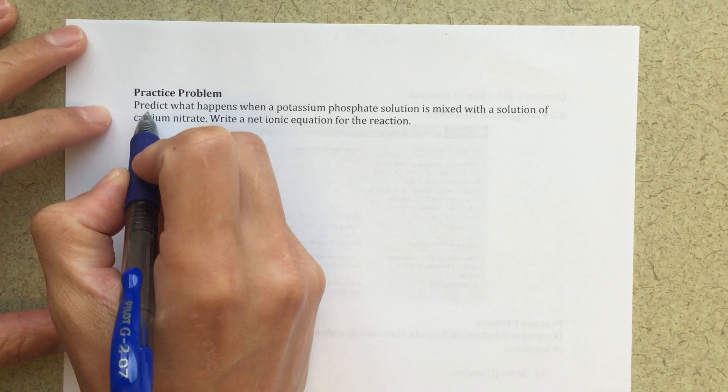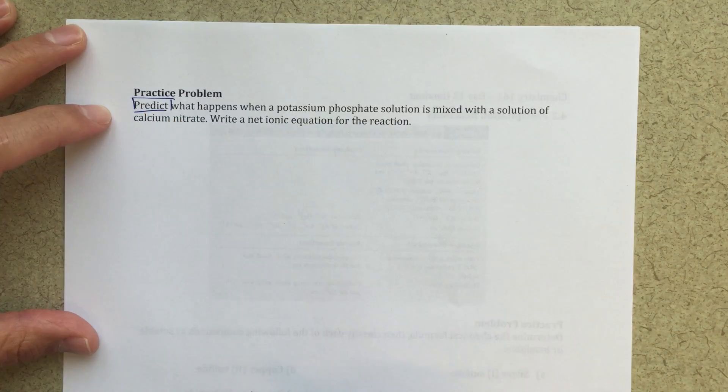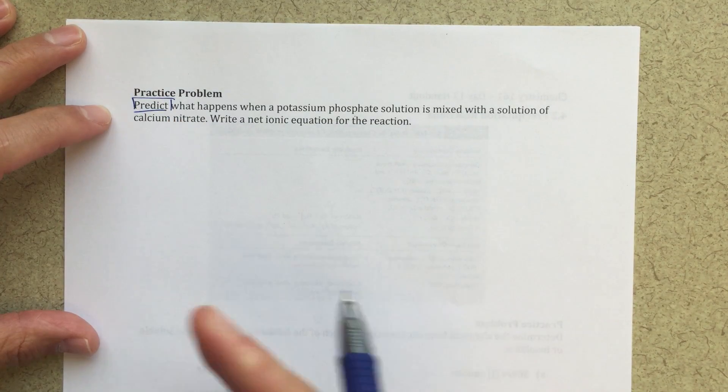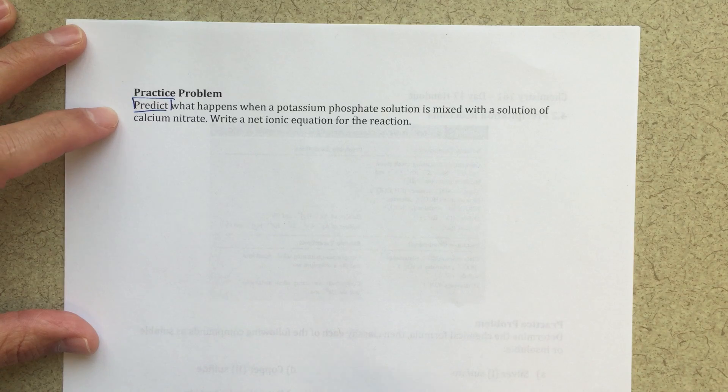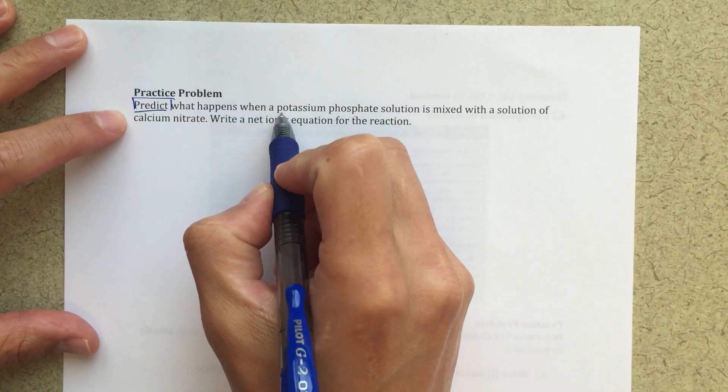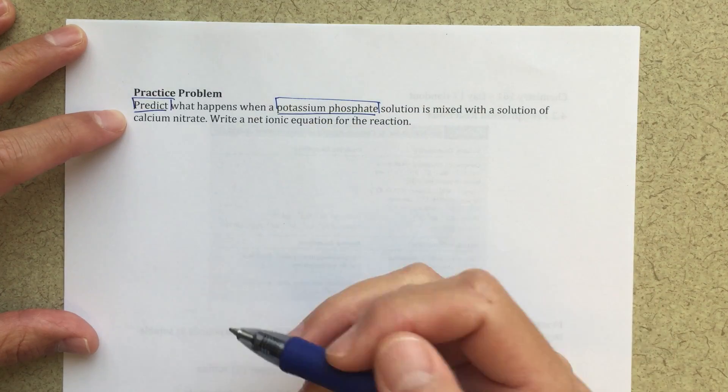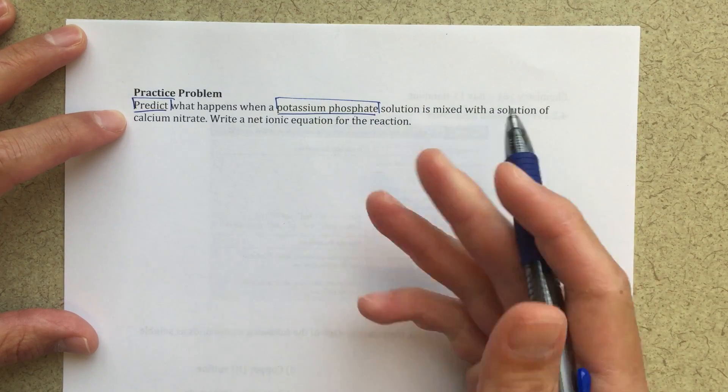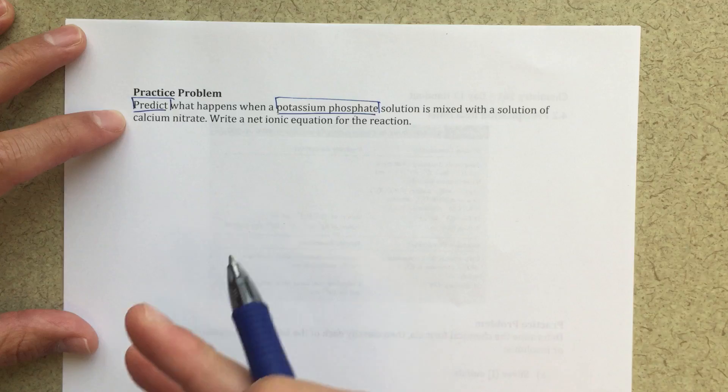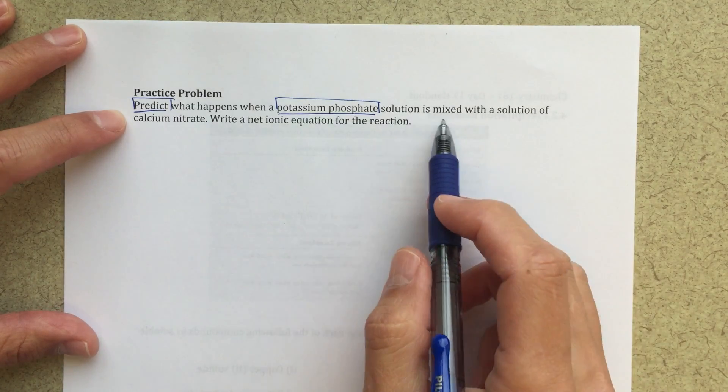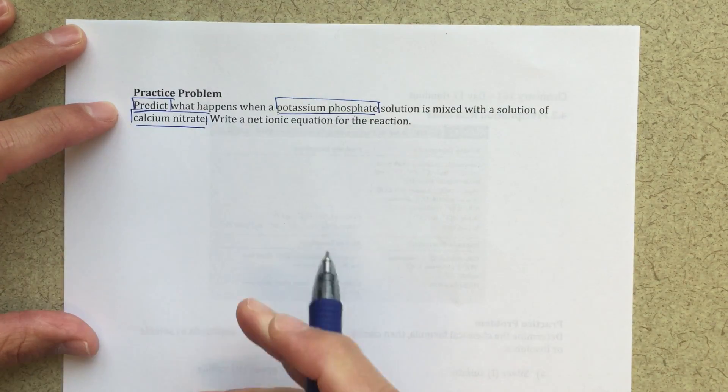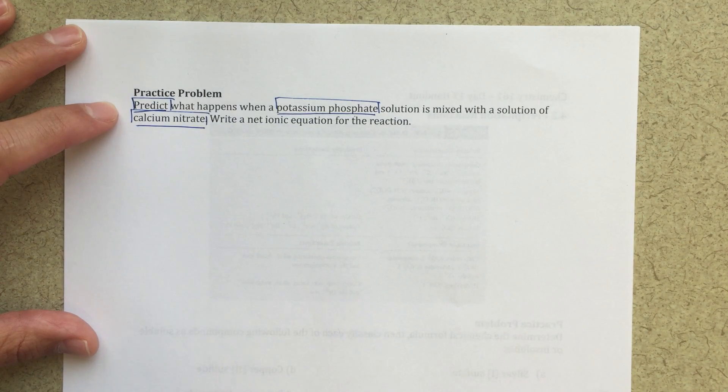This question is asking us to predict, and that's really the key here, predicting what's going to happen when I mix these two chemical species together. Predict what happens when a potassium phosphate solution, so I'm going to need to figure out what that means basically. And solution means dissolved in water, so that's going to be an aqueous solution, is mixed with a solution of calcium nitrate. So those are the starting pieces that I'm going to want to utilize.